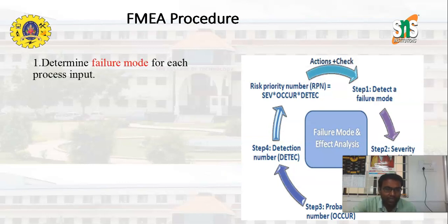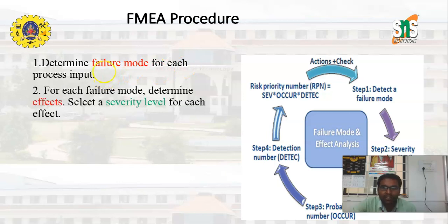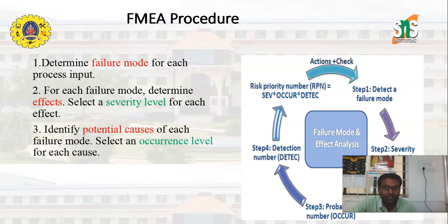Now we will discuss the various steps involved in FMEA analysis. The first important step is to determine the failure mode for each process input. For each failure mode, we determine its effects and select a severity level. Next, we identify the potential cause of each failure mode and select an occurrence level for each cause on a 1 to 10 ratio.